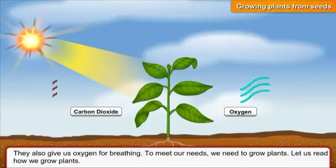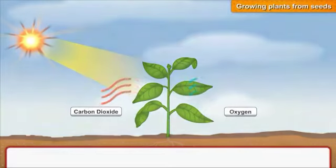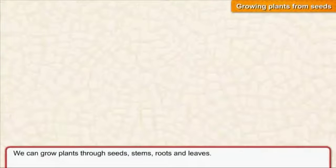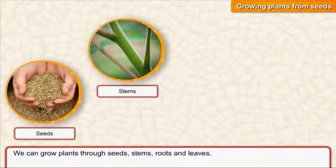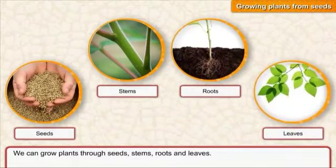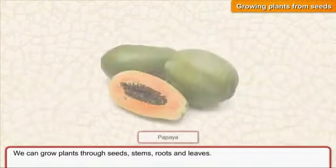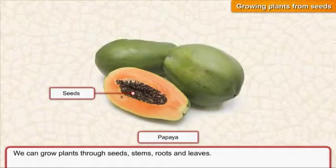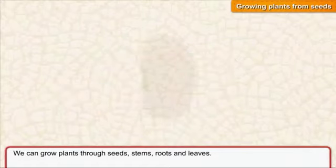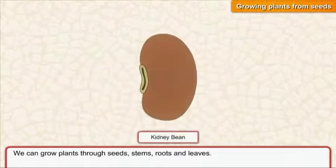Let us learn how we grow plants. We can grow plants through seeds, stems, roots, and leaves. Through seeds, examples include papaya and kidney beans.